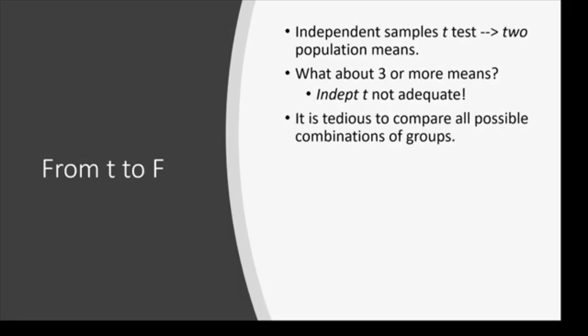One of the reasons why we can't do a T-test is a more minor reason: it's kind of tedious to compare all the possible combinations of groups. If I had three groups, I'd do one versus two, then two versus three, then one versus three. That's a lot of work.